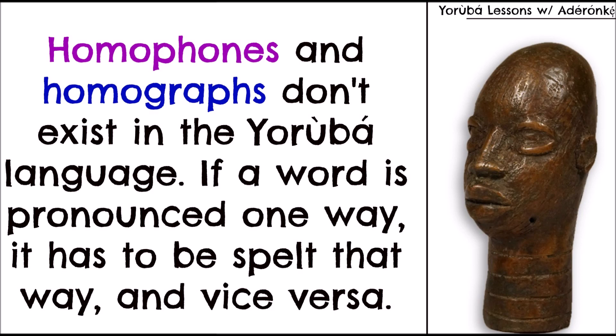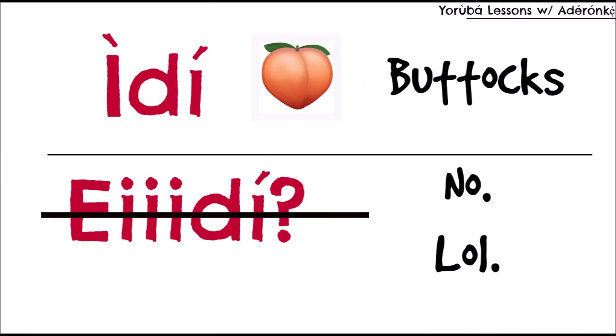It's easier to explain something when you're trying to prove that it exists as opposed to proving that it doesn't exist. Apart from the fact that it's a tonal language, these are two separate languages and the rules that apply to them are not similar. Homophones and homographs don't exist because the Yoruba language is a tonal language — if something follows a tone, it has to be written in accordance with that tone, and if something is written one way, it has to be pronounced that way. You can't go crazy with the spellings.